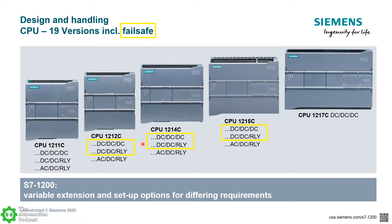When ordering a 1200, if you're trying to figure out which one is right for you — for example a 1214C — look at the configuration suffix like AC/DC/RLY. The first letters indicate the power supply: DC means 24 volt DC, AC means 120 volt AC. The middle 'DC' indicates the digital input type, which is always 24 volt DC — relay inputs aren't built into the CPU but can be added via expansion IO. The last part — RLY — stands for relay outputs, or you can get 24 volt DC outputs instead; relay outputs can handle either AC or DC signals.